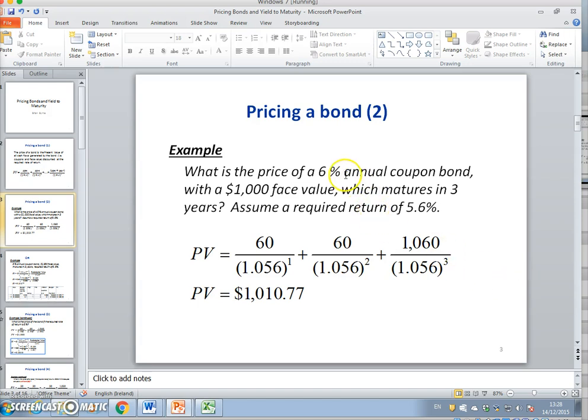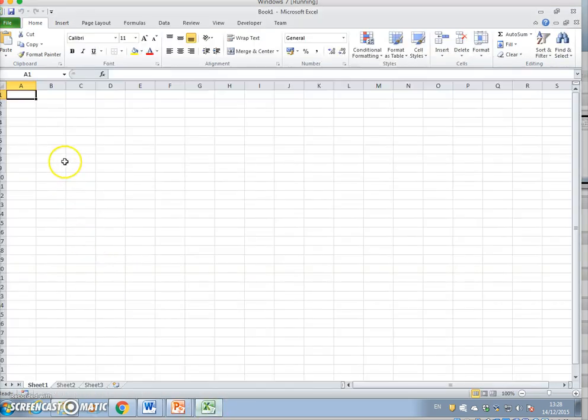Say we have a bond with a face value of $1,000 that matures in three years, and we apply a discount rate of 5.6%. How would we value, or what is the value of the bond? The bond would represent, first of all, a coupon rate.